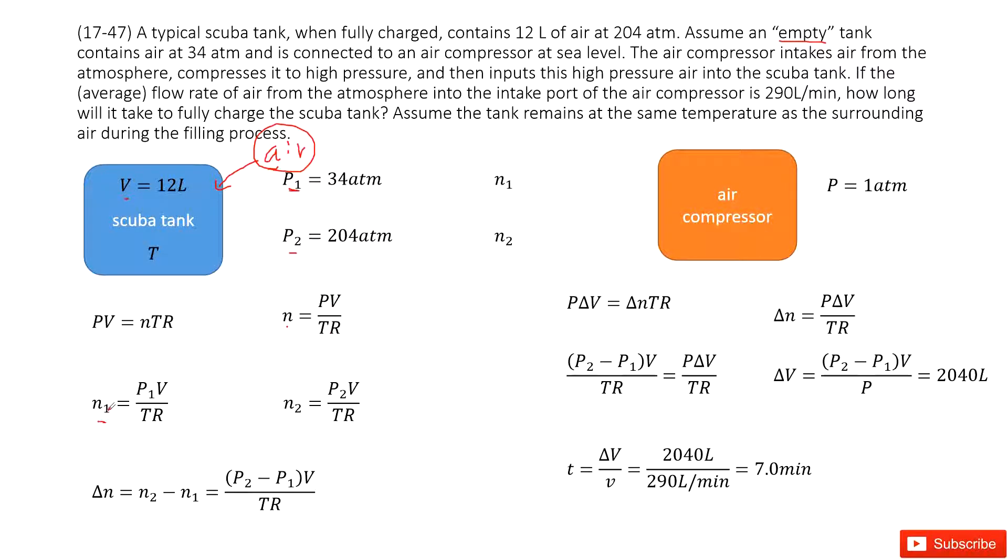So initial state n1, it is empty, but it is not exactly empty. Some air inside. So n1 is P1 times V divided by T times R. And now in this situation, in the final situation when it is filled, n2 is the molar number of gas filled, P2 times V divided by T times R.